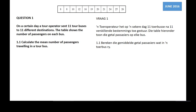Please have your calculator and work through with me. This is an example showing how to calculate all five indicators — your five-number summary. Question 1, from June 2016: on a certain day, a tour operator sent 11 tour buses to 11 different destinations. The table shows the number of passengers on each bus.